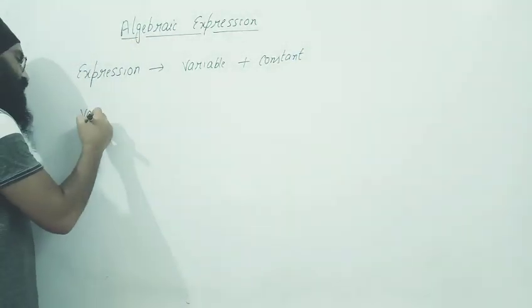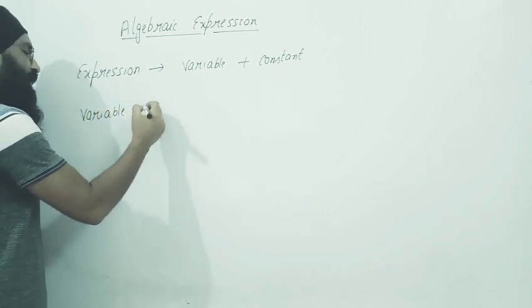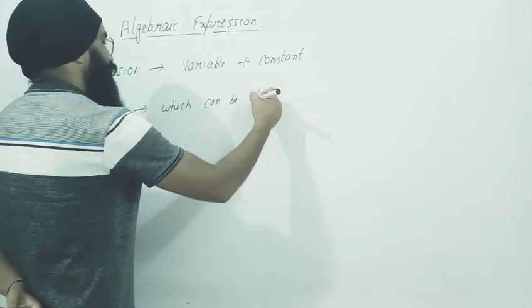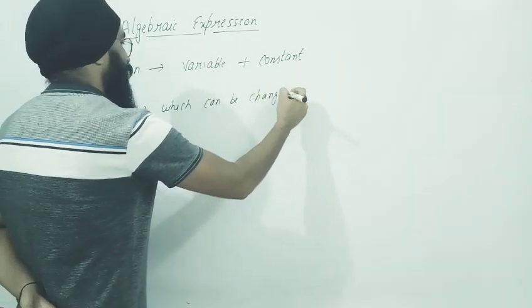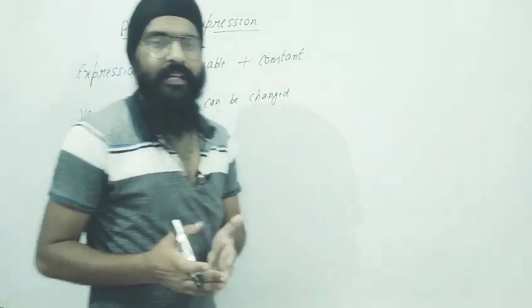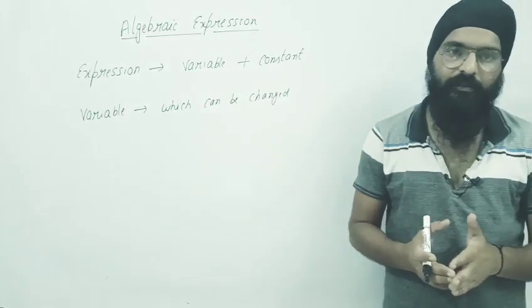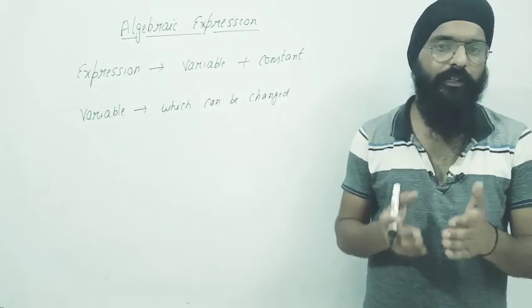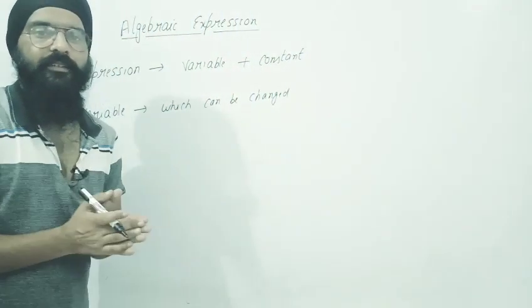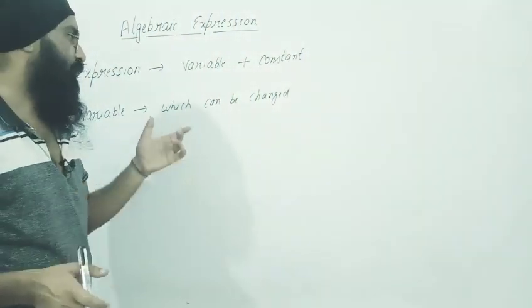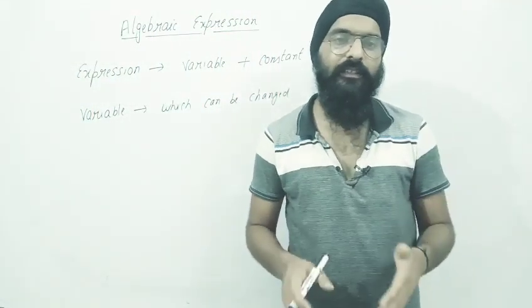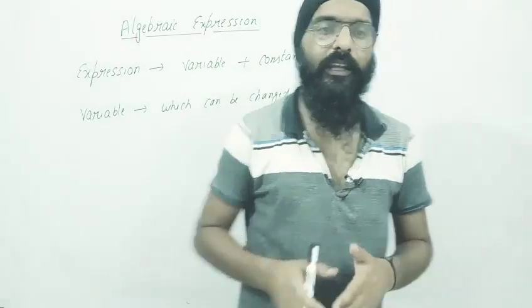Now what is variable? Variable means which can be changed - whose value can be changed. Variable is something whose value varies, value changes. Like temperature, temperature is a variable because temperature never remains constant - it increases, decreases, can be zero, anything. So it is a variable. Your age is also a variable.